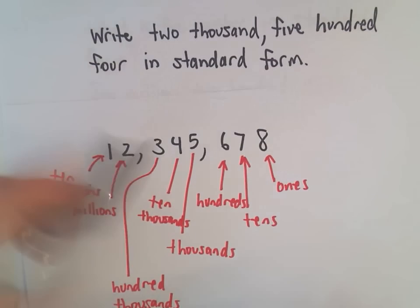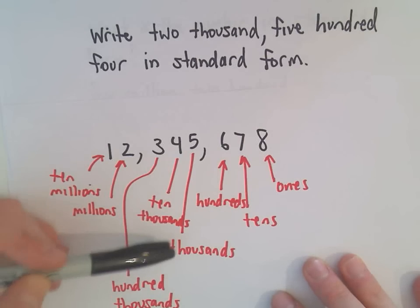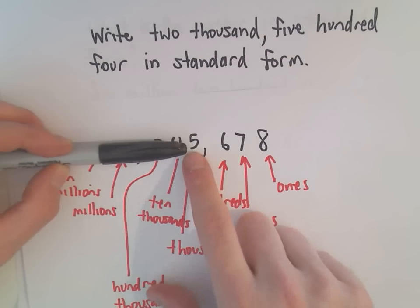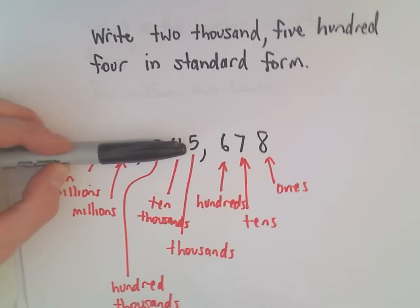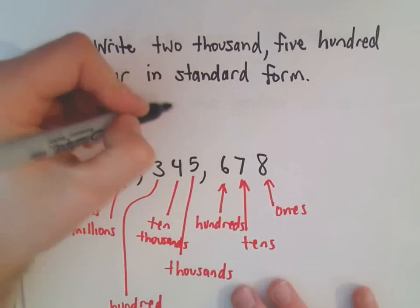So it says we have 2,504. Well, 2,000, I find the thousands place, which would basically be right there. And the thousands place, it says we have 2,000s. So instead of my 5, I'm simply going to have a 2.